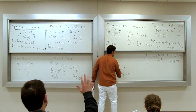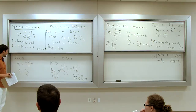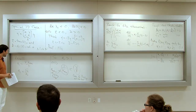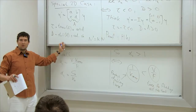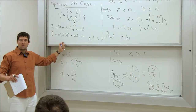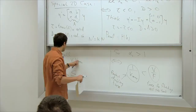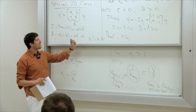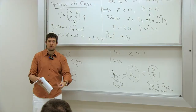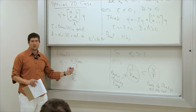A student asks why we non-dimensionalize if we eventually need to go back to original variables. The answer: the analysis in the simplified two-parameter system is far cleaner than working with all six original parameters. You do the analysis in the non-dimensionalized framework first, then translate back — which is exactly what we're doing now to interpret the second condition.